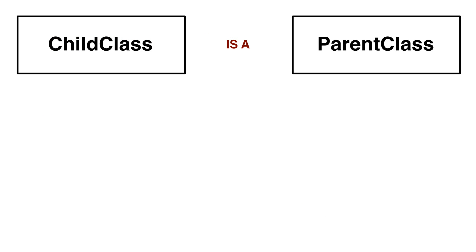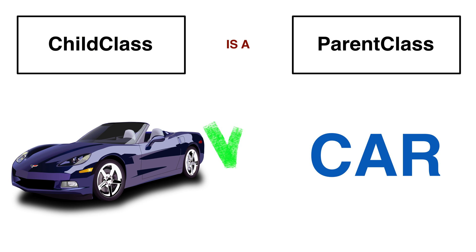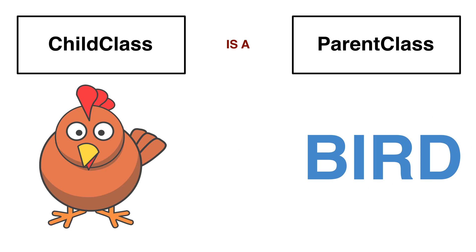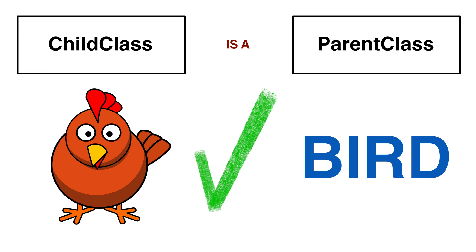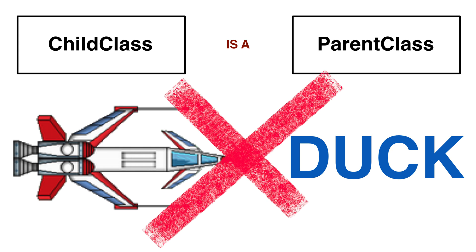Parent classes should be more general concepts than child classes. The Java class inheritance relationship between two classes denotes an 'is-a' relationship. To mentally test if one class should be a child of another, we ask: is the child a class of the parent class? For example, is a sports car a car? Is a chicken a bird? If we answer yes, that's a candidate for inheritance. On the other hand, if we ask, is a spaceship a duck? The answer is likely no.